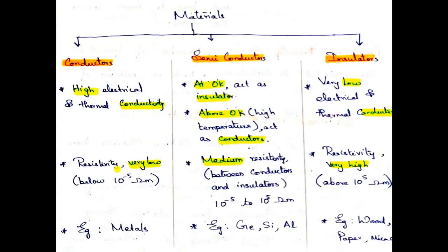What is resistivity? Resistivity is the tendency or capacity of the material to block the electricity or heat which is trying to pass through it. For conductors, it is very very low, so electricity or heat can pass through them very easily. For insulators, it is very high. For semiconductors, it is in between. In approximate range, for conductors it is 10 to the power of minus 5 ohm meter. For insulators, it is above 10 to the power of ohm meter. For semiconductors, it is in between.